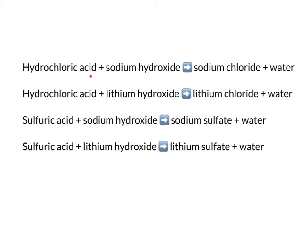Whereas the acid gives us the second part. Hydrochloric acid gives us sodium chloride or lithium chloride. Sulfuric acid gives us sodium sulfate or lithium sulfate. So it's the acid that gives us the second part of the salt's name. We can see these highlighted: in our alkali, we have sodium or lithium. From the acid, hydrochloric gives us chloride, and sulfuric acid gives us sulfate.